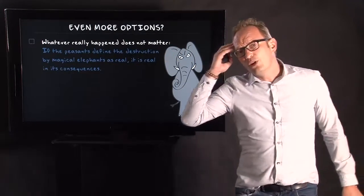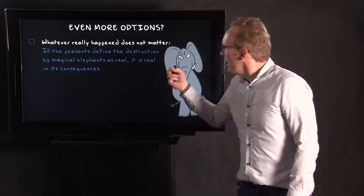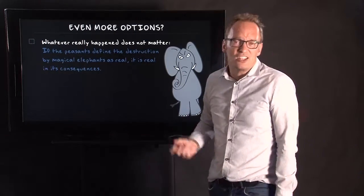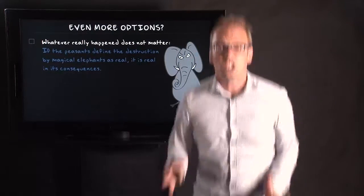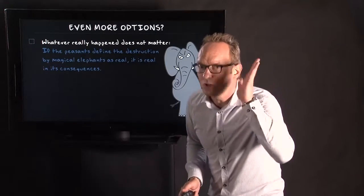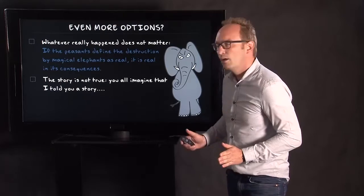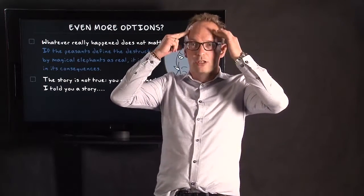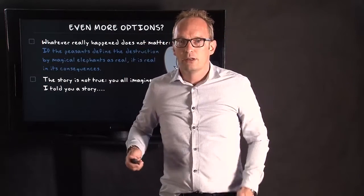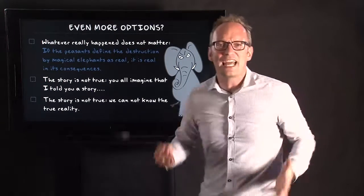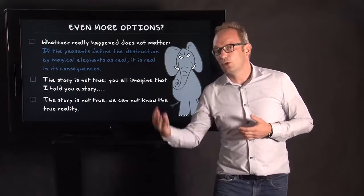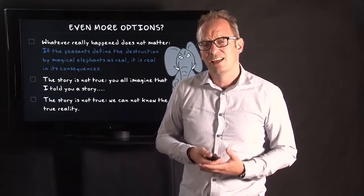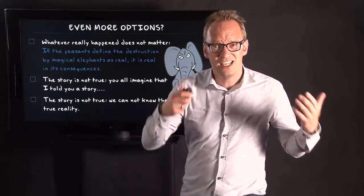Because we can also rephrase the question a little bit and then say well whatever really happened does not matter. Because if the peasants define the destruction by magical elephants as real, it is real in its consequences. And sociologists among you will know who I paraphrase here. We could also say well the story is not true. You all imagine that I told you a story. Or we could say well the story is not true because we cannot know true reality. Now all these questions relate to the idea of reality. What is reality? And second, can we know reality? And that's where I want to pose a few questions about as well.